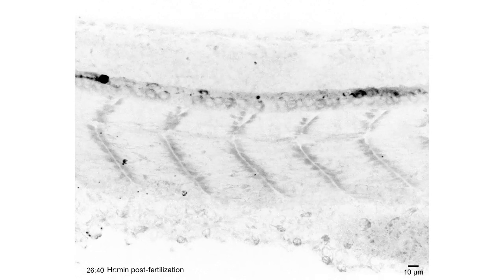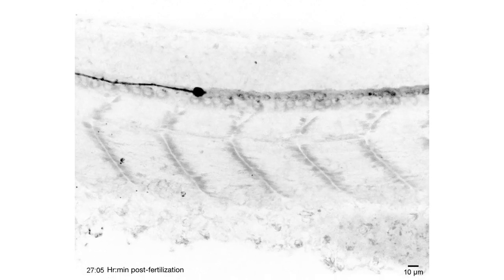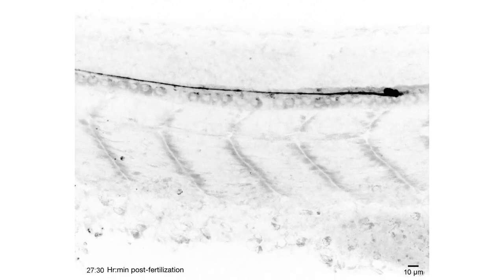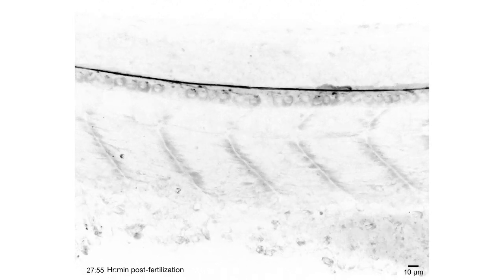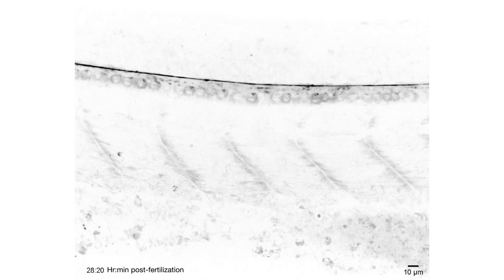If we watch the same process at higher magnification, we can see clumps of material traveling toward the tail tip and then a bolus of material leading the assembled fiber down the central canal.